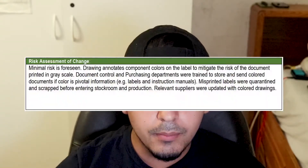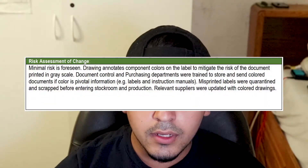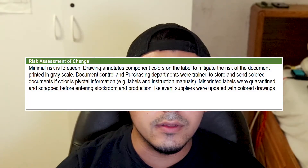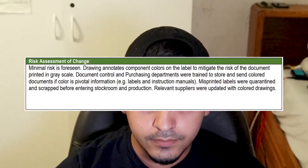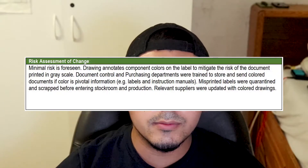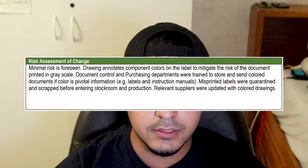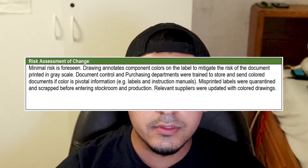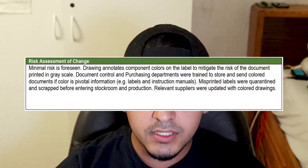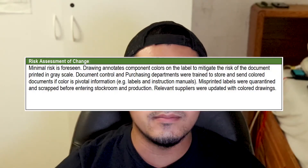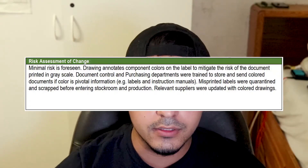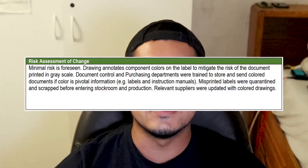Here is an example risk assessment: 'Minimal risk is foreseen. Drawing annotates component colors on the label to mitigate the risk of the document being printed in grayscale. Document control and purchasing departments were trained to store and send colored documents if color is pivotal information — examples include labels and instruction manuals. Misprinted labels were quarantined and scrapped before entering stockroom and production. Relevant suppliers were updated with colored drawings.' It's straightforward, simple, brief, and anyone can understand it.